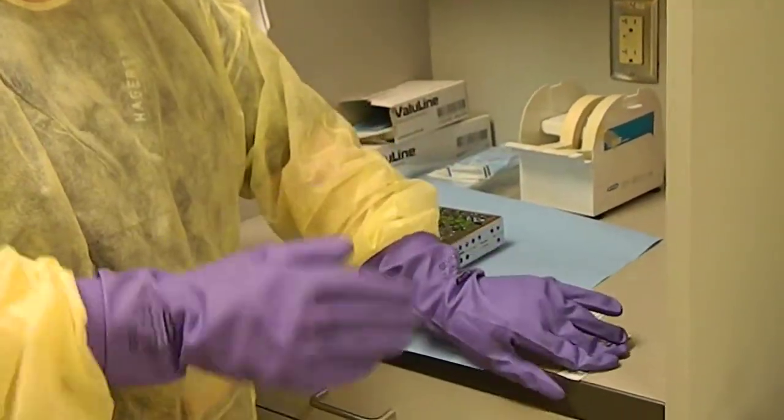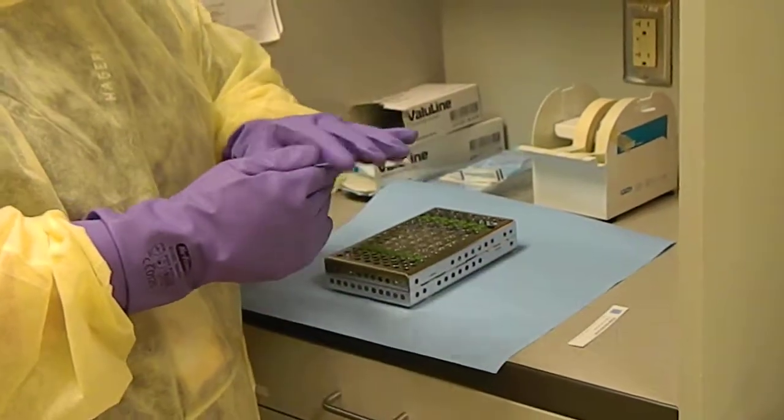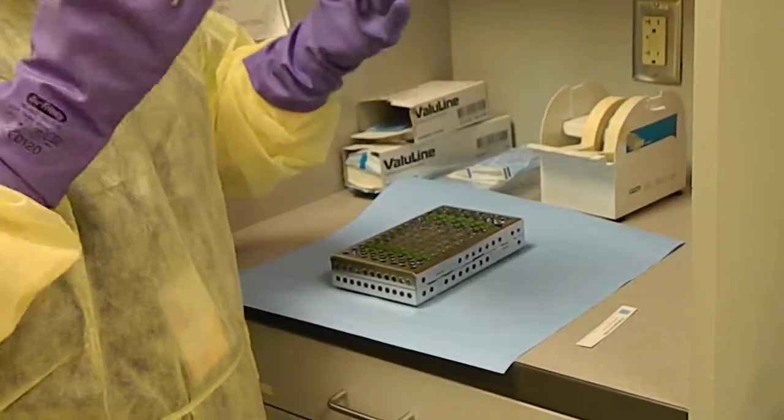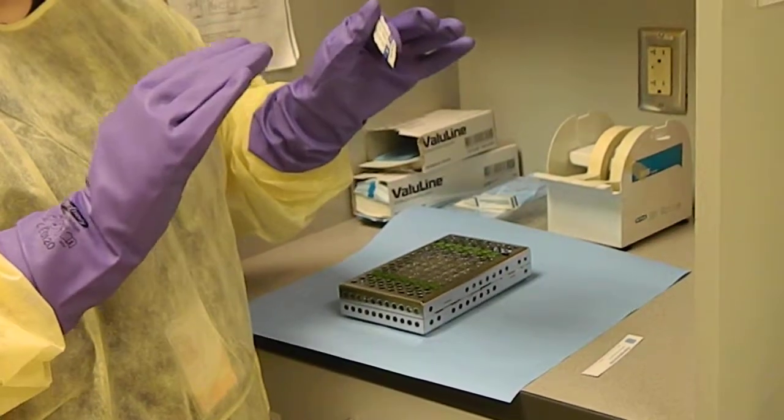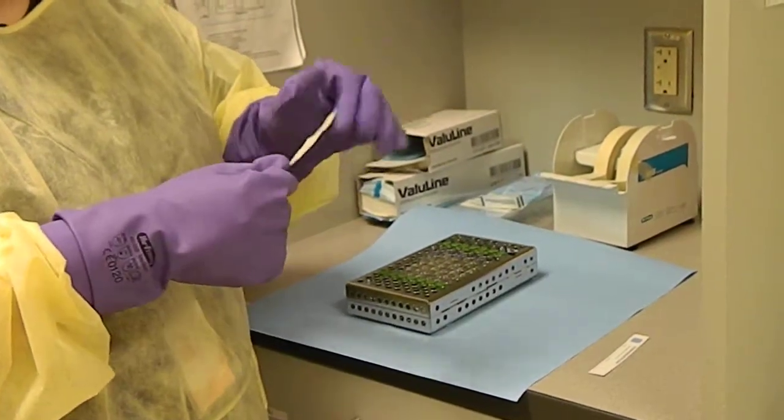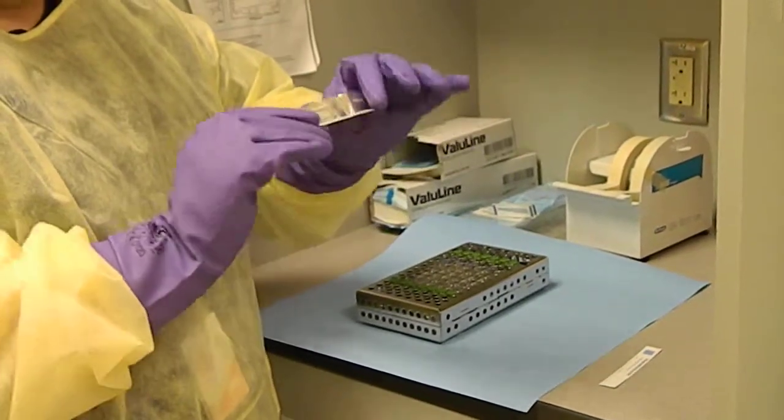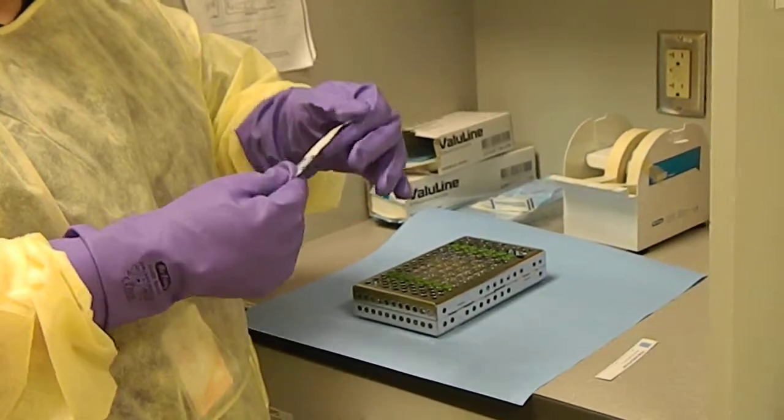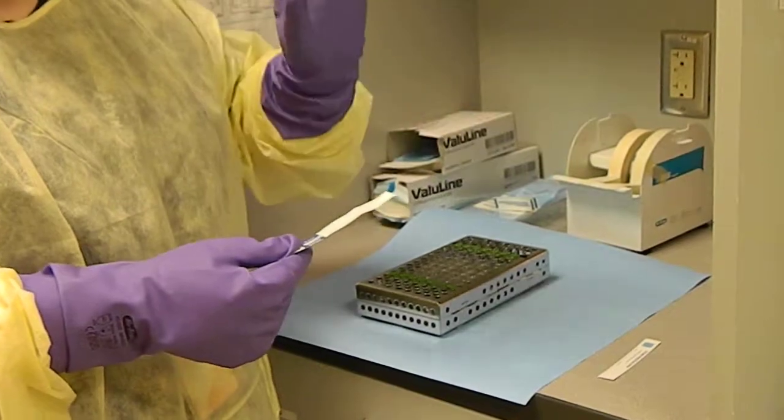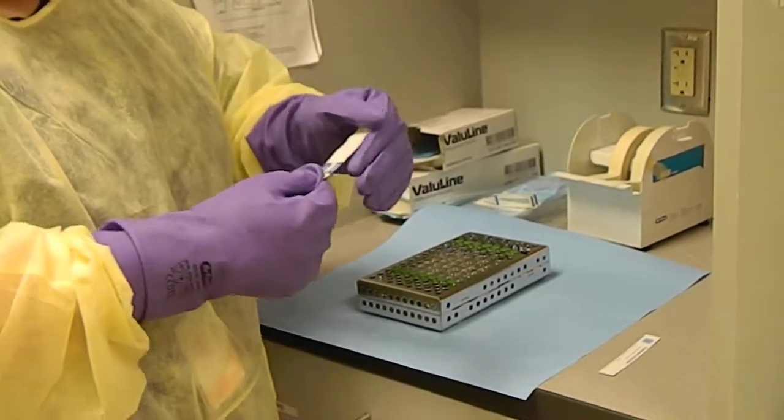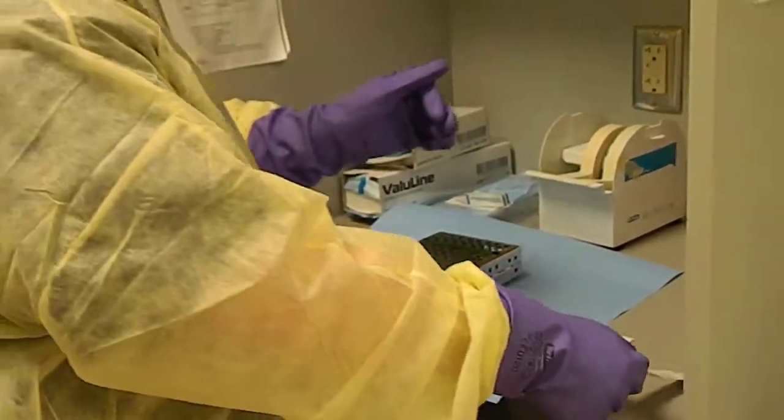The other one is for use with the autoclaves and the statums and this shows that the steam and the heat reached a certain level inside of the machine that's sterilizing. So that is our integrator strip and it has a metal backing. So make sure you put the right one inside the cassette and the right one inside the autoclave. And we'll talk about this one shortly here.